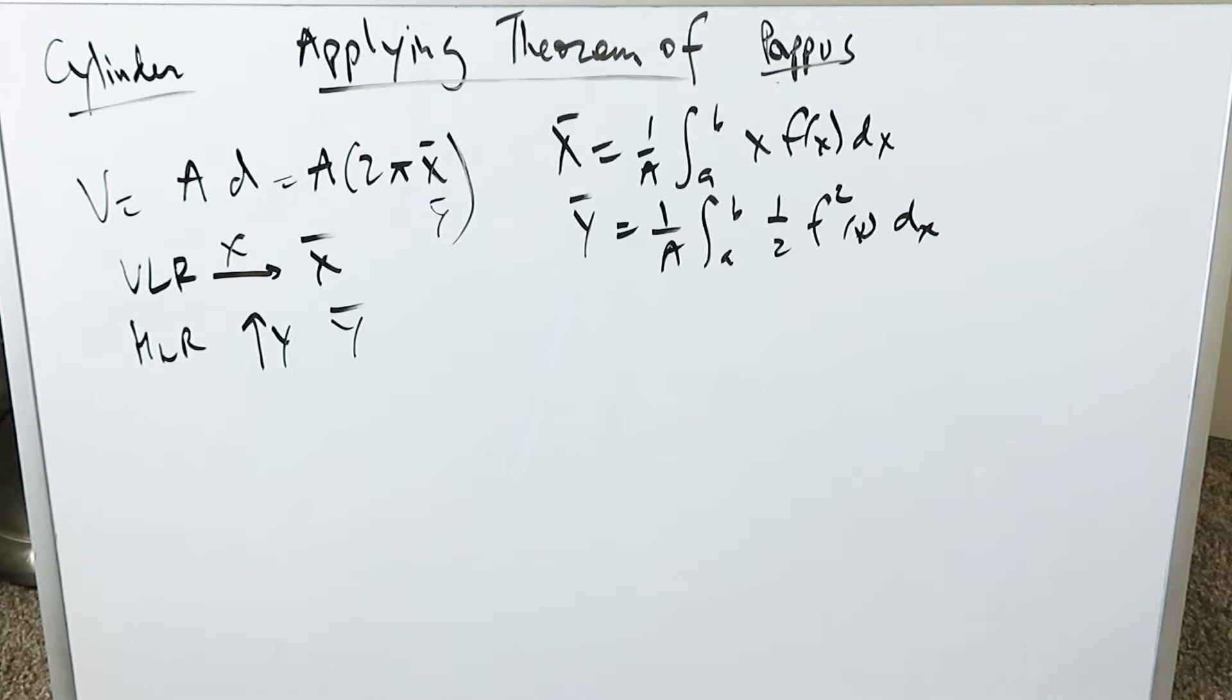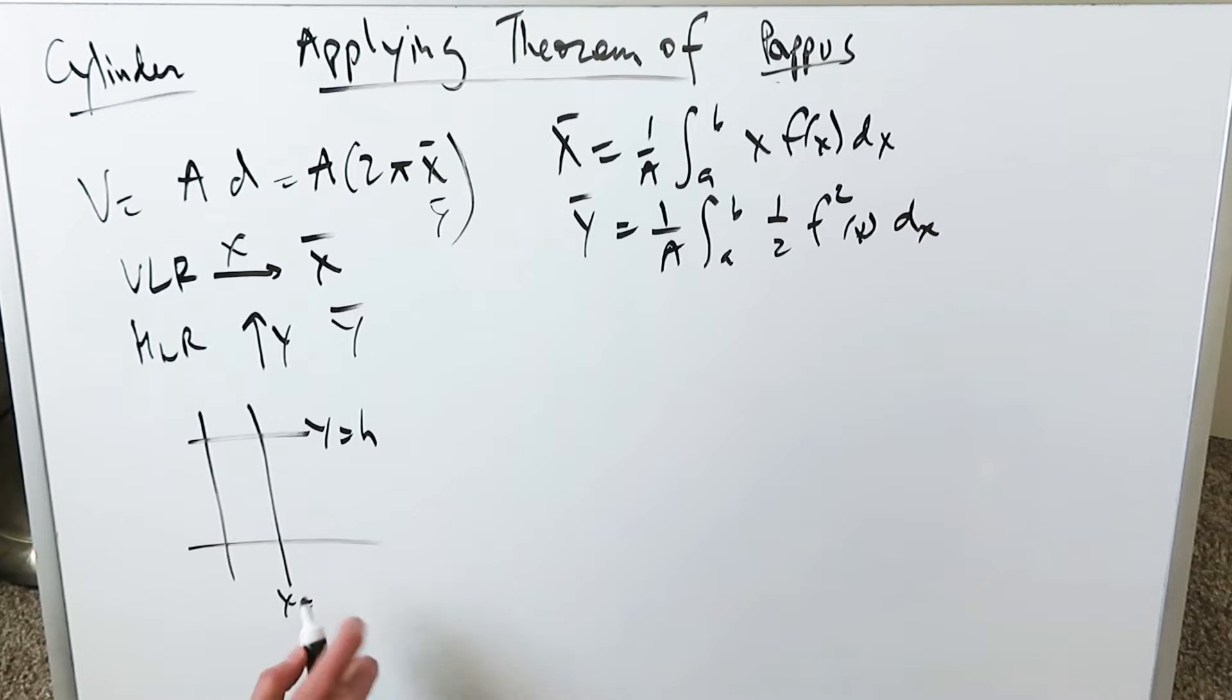When we're looking here at the cylinder how can everything get started? I have here x equals r and y equals h.